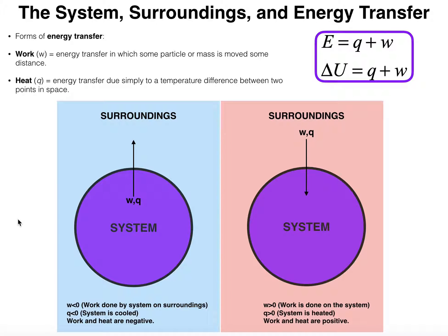One of the things we're going to be talking about extensively in thermodynamics is energy transfer. At this point in general chemistry, we're really going to talk about two kinds of energy transfers: work and heat. There are other types of energies and state functions we'll define later in general chemistry one and two, but for now we're just going to talk about work and heat.